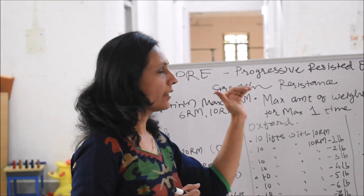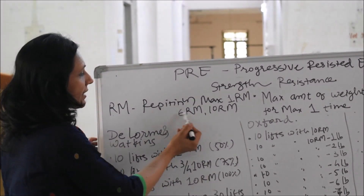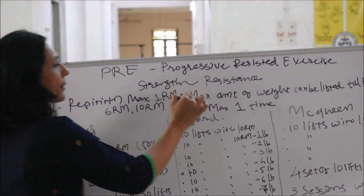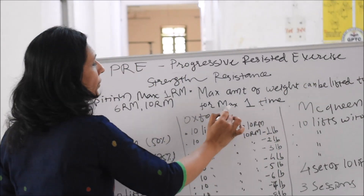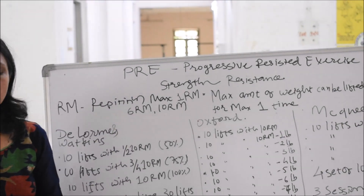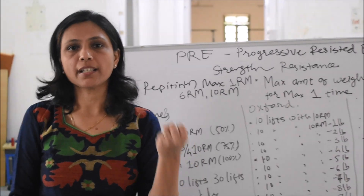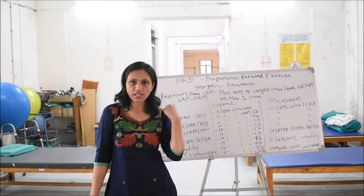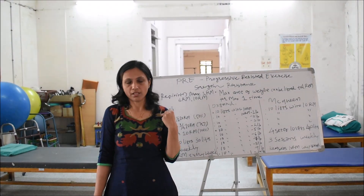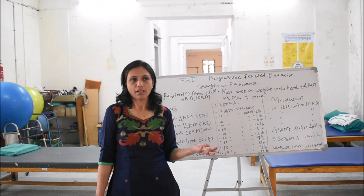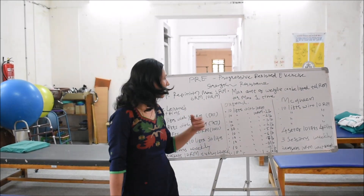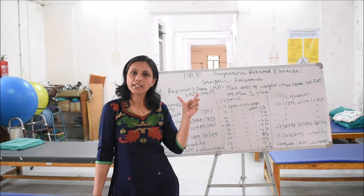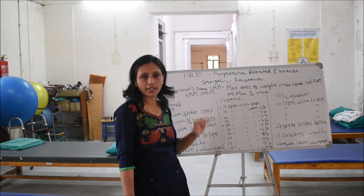That amount is called one repetition maximum. Similarly, 6RM is the maximum amount of weight that can be lifted in full range of motion for a maximum of 6 repetitions, and 10RM is for a maximum of 10 repetitions. In our bicep example, if 15 kg is my 1RM, then 10 kg might be my 6RM — meaning I can lift 10 kg for 6 repetitions but not a 7th. And if 8 kg allows exactly 10 repetitions but not an 11th, then 8 kg is my 10RM. So likewise we can find out 1RM, 6RM, and 10RM.